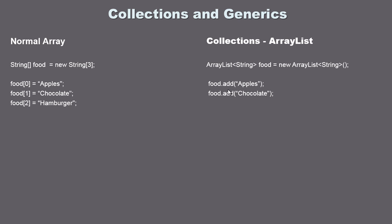With a collection you can add and remove items as you please during runtime. The other thing to notice is that collections use methods. We created an object called food and we're using the add method, which comes from the ArrayList. With a normal array we use the equal sign to assign values — we're not using methods. Using methods adds a little overhead, so a normal array is slightly more efficient at runtime than a collection.